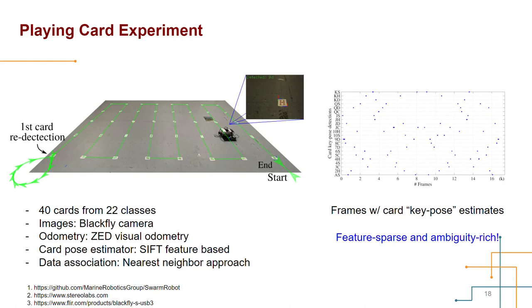To evaluate our approach, we carried out two object SLAM experiments. The first one is conducted with playing cards as landmarks, modeling the symmetric property of daily objects. We put 40 playing cards on the ground with a 5x8 configuration. They are drawn from 22 classes, where some cards are unique and some have a duplicate. We equipped the marine robotics group swarm robot with a forward-pointing ZED camera for visual odometry and a down-looking blackfly camera to take images. The robot is controlled to follow a lawnmower patterned path. Each card is first observed from one angle and later revisited from the opposite.